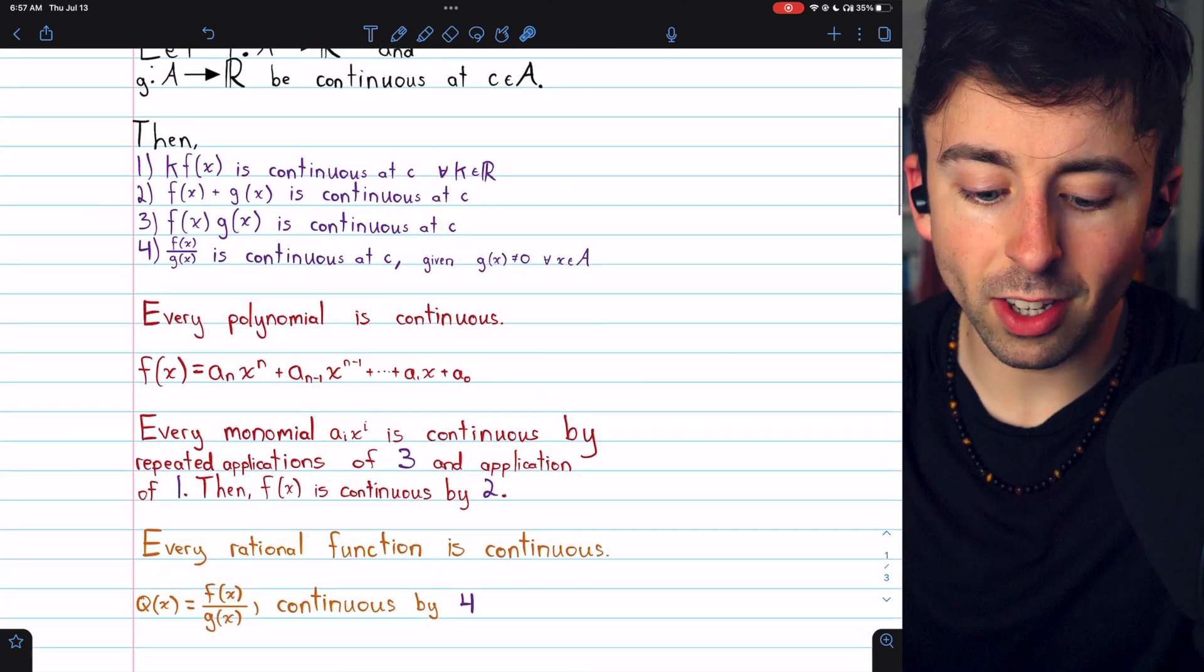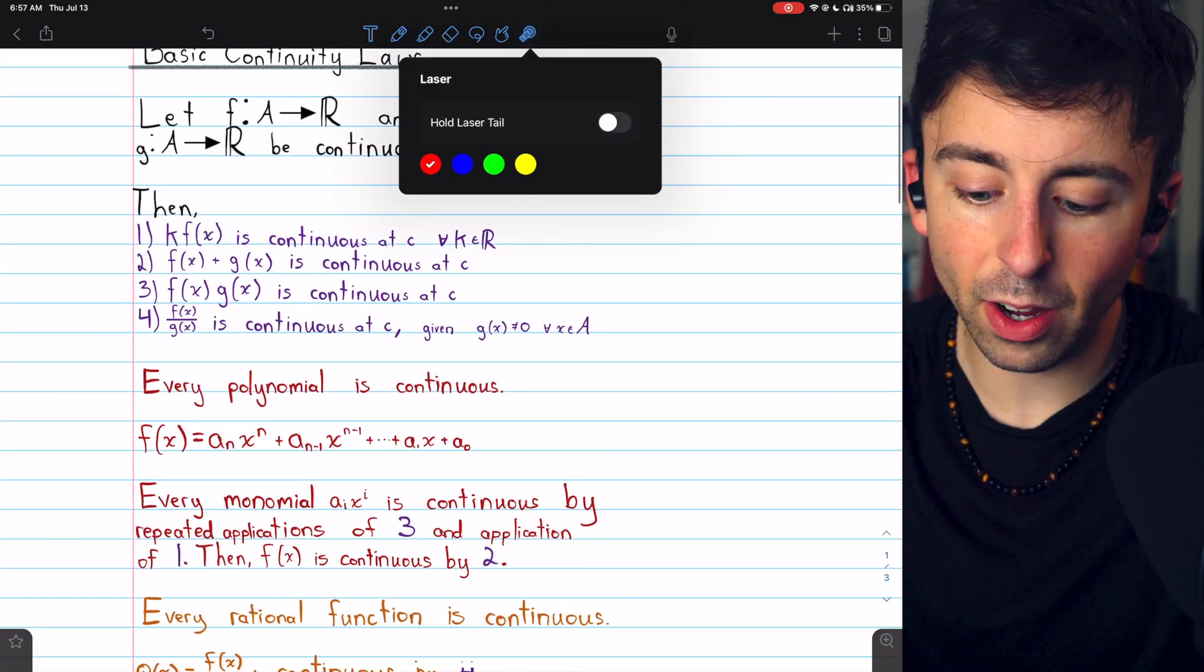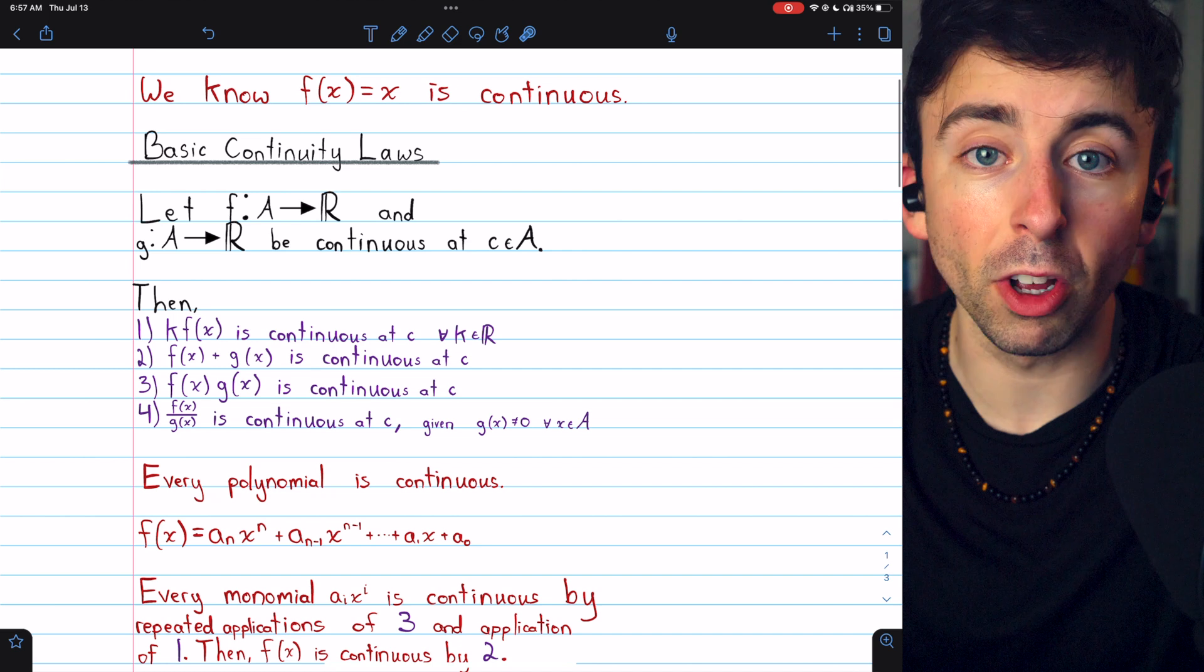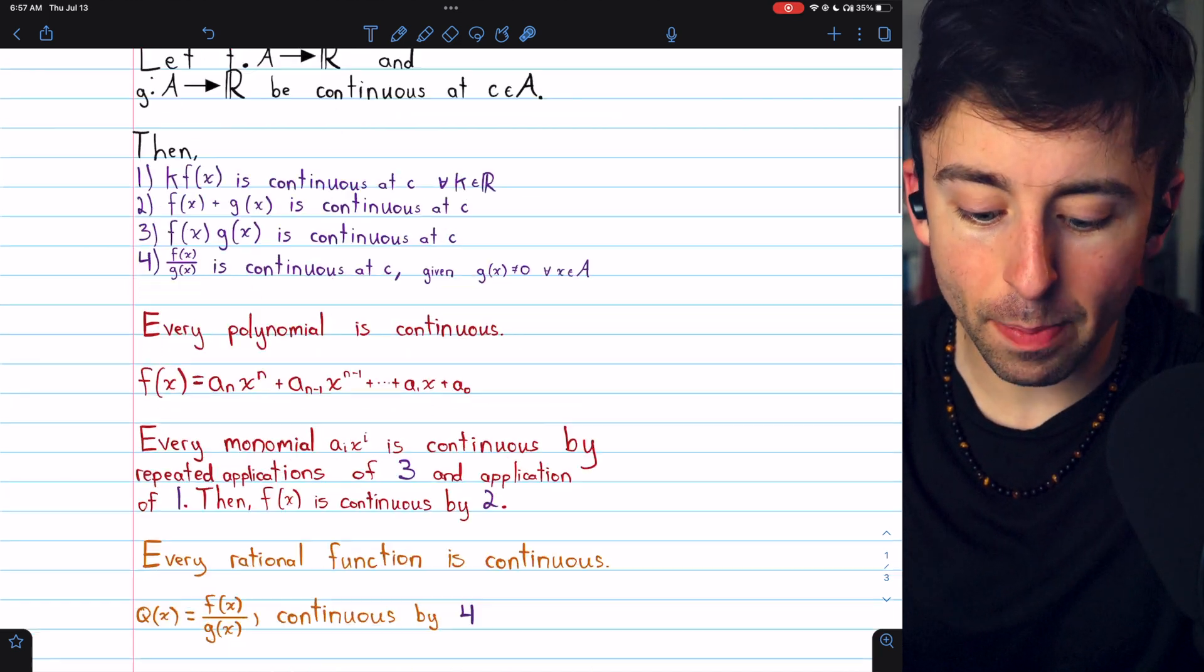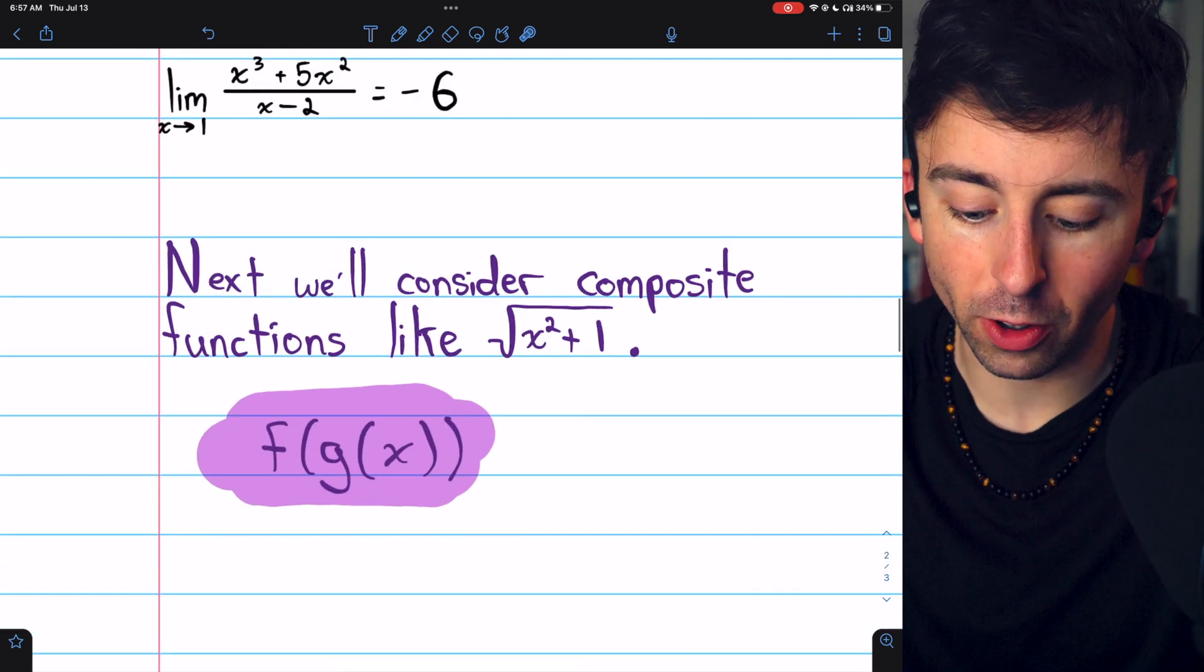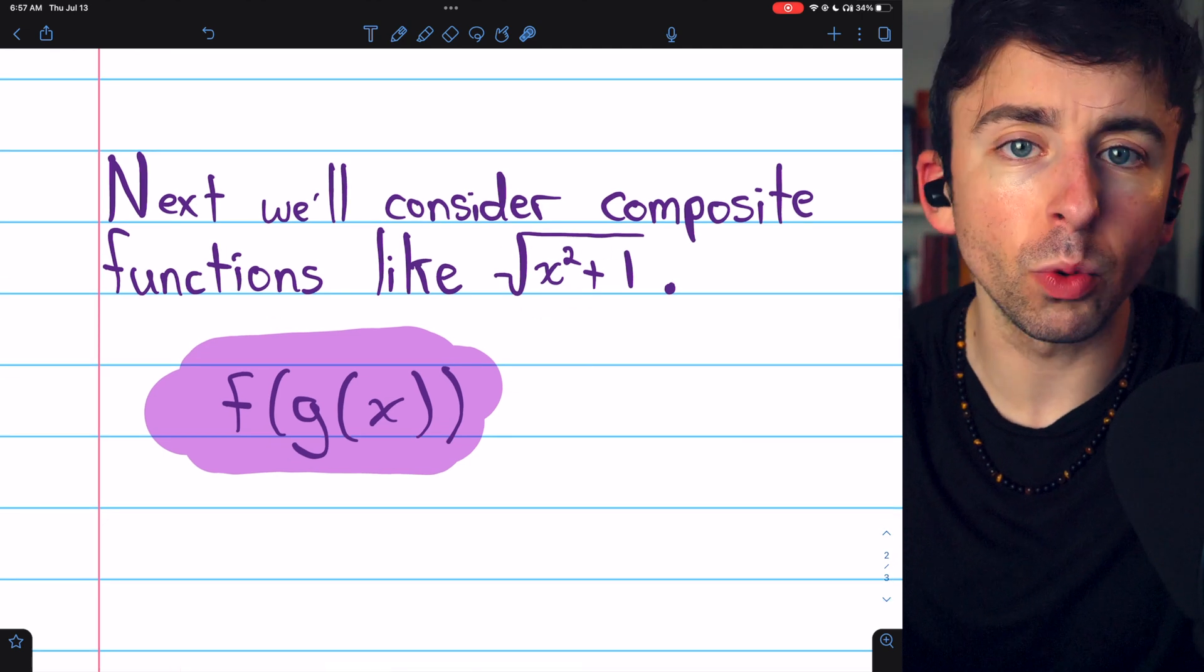So that's nice. Rational functions are continuous, and so are polynomials. But with that, we have pretty much run these results dry. Next up, we'll consider composite functions, like the square root of x squared plus 1.